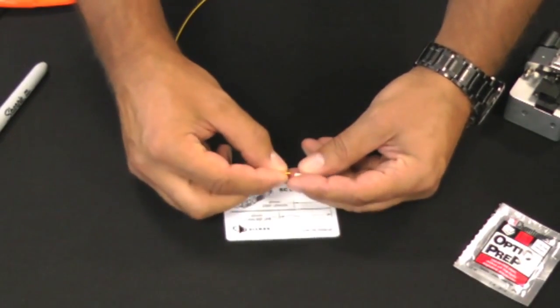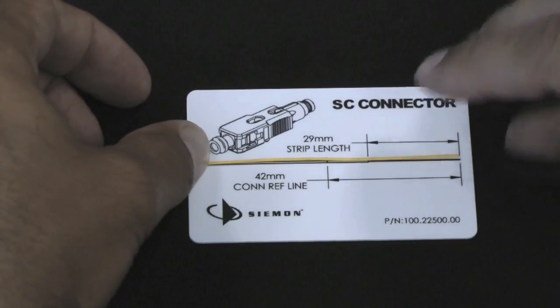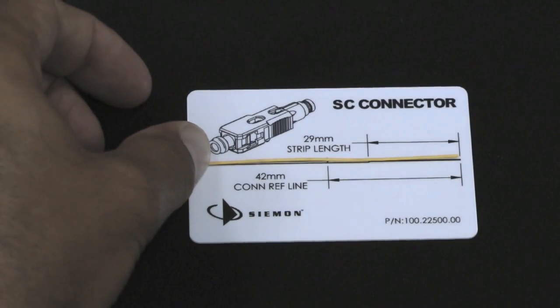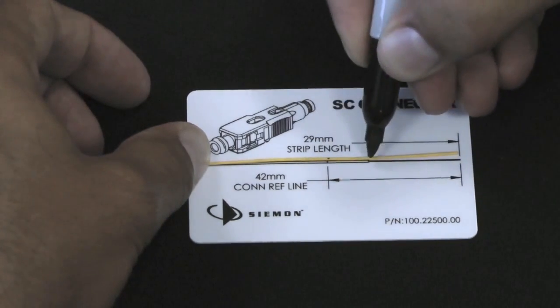Place the boot on the 900 micron fiber and pull it back out of the way. Next, place the fiber on the strip template card. The first mark will be the reference dot at the back of the connector. The second will be the buffer strip length mark.